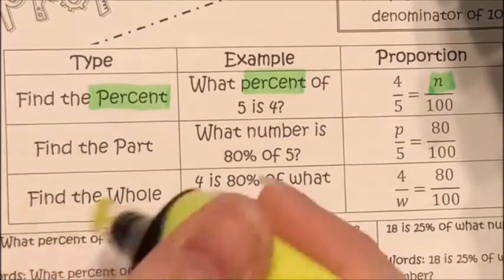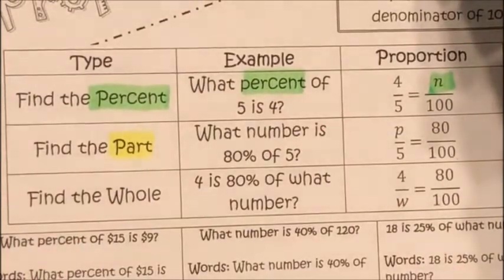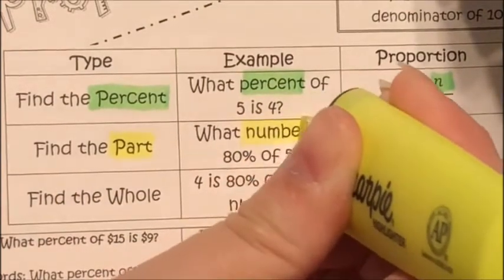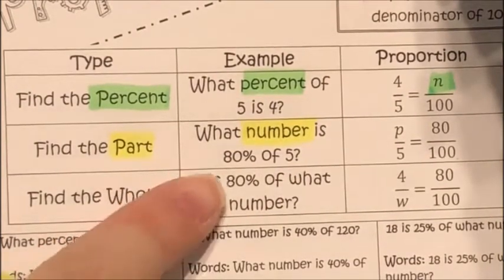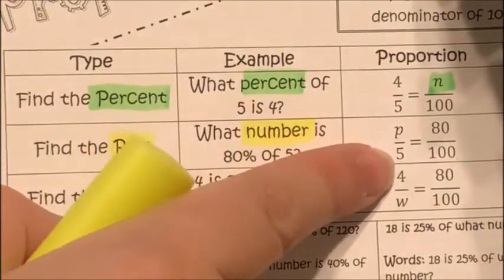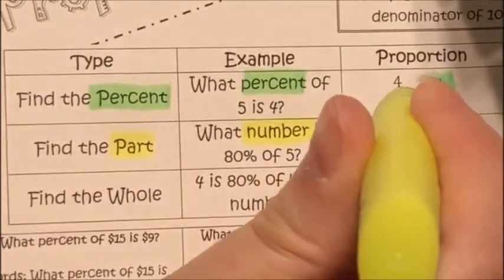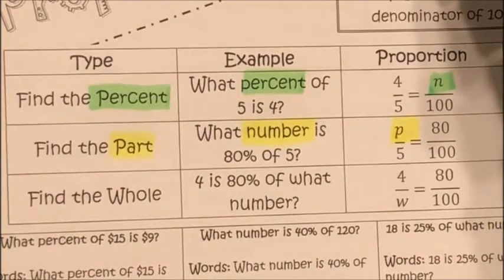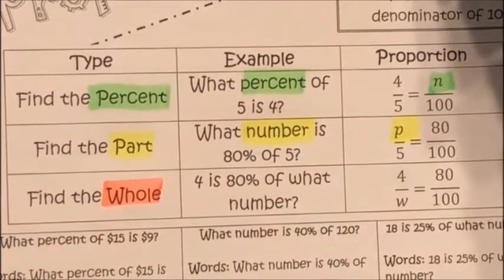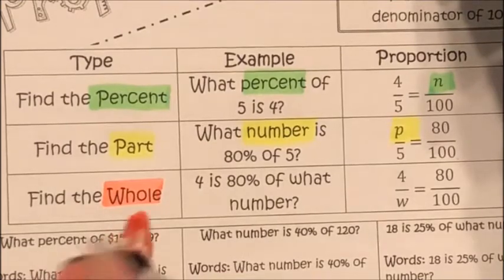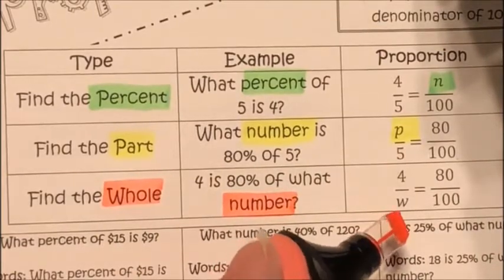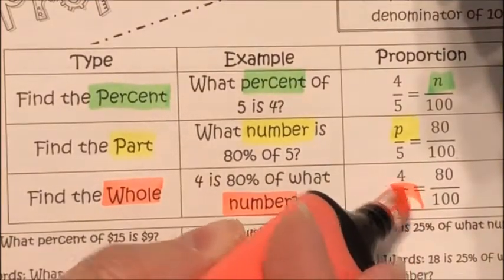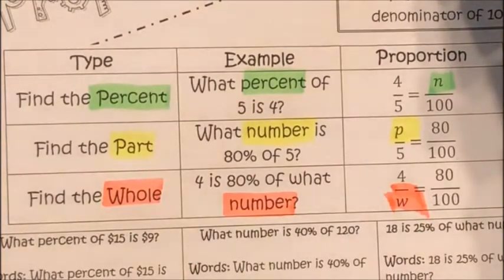If I'm finding a part — for example, what number is 80% of five — percents always go over a hundred, so I have eighty over a hundred equals the part p. The last type is finding the whole: four is 80% of what number, so I have four over w equals eighty over a hundred.